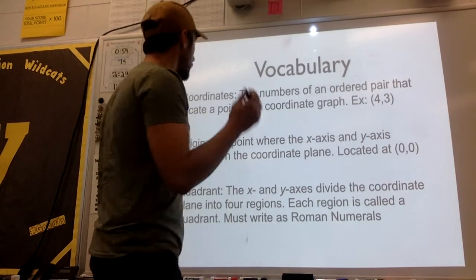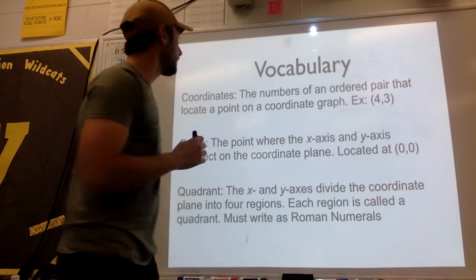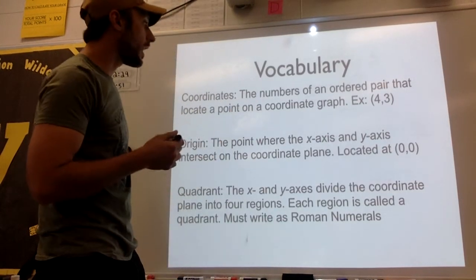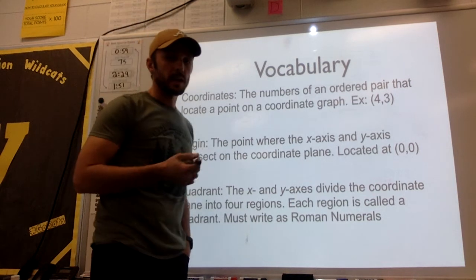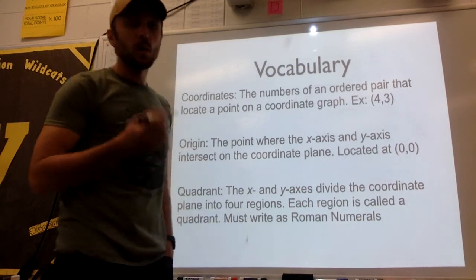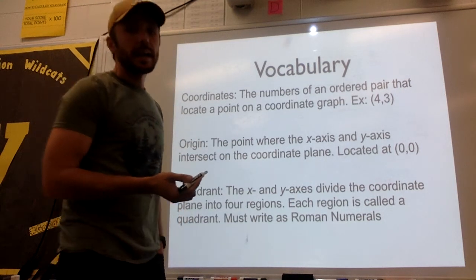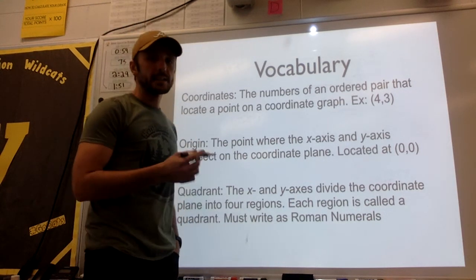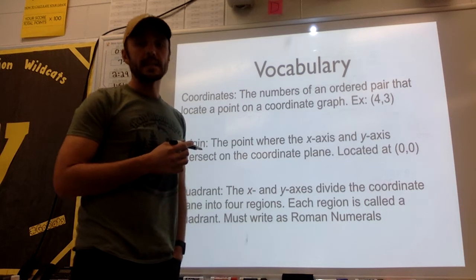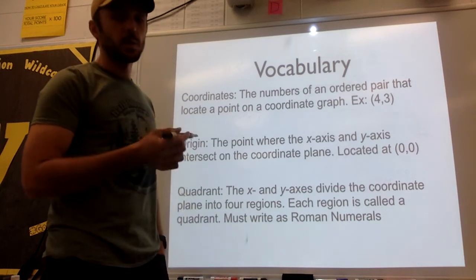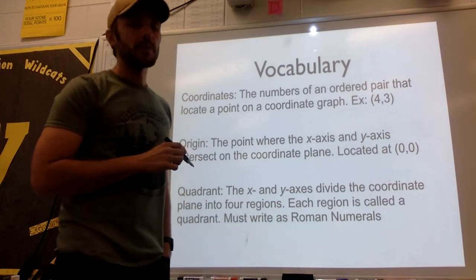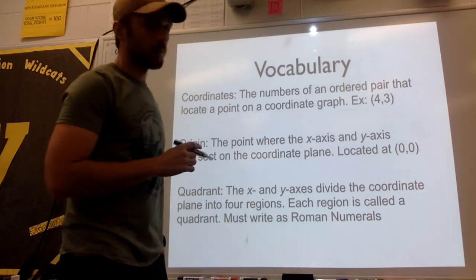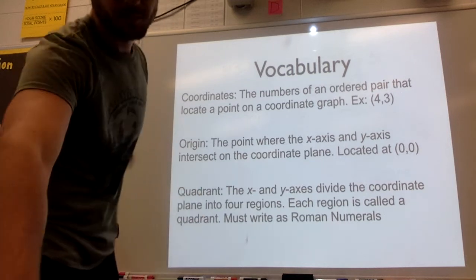So, we've talked about coordinates. It's the x and y, and it tells us which way to go — left or right, up and down. The origin is where the x-axis and the y-axis intersect. That's where we always start graphing. It's located at 0, 0, and we've talked about the four quadrants.